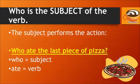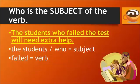Who is the subject of the verb. The subject performs the action. For example: who ate the last piece of pizza? Who is the subject and ate is the verb. Here's another example: the students who failed the test will need extra help. The students and who are the subject, and failed is the verb.